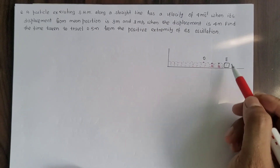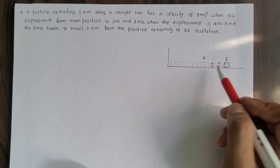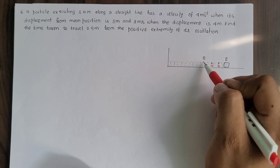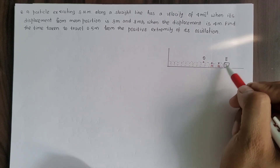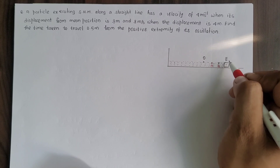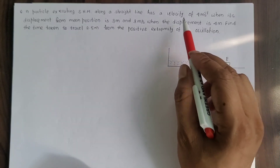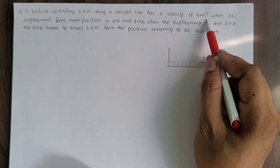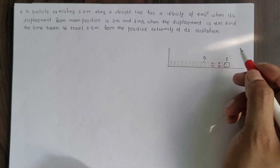For this example of simple harmonic motion, consider a spring-mass system. Let O be the mean position of the given system and E be the extremities, that is, the extreme positions of the oscillation. The velocity of the oscillating particle is 4 meter per second when its displacement from the mean position is 3 meter.